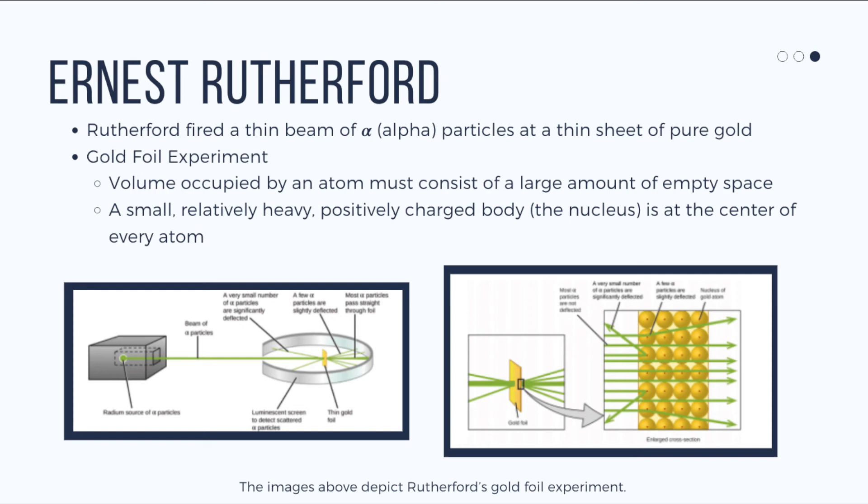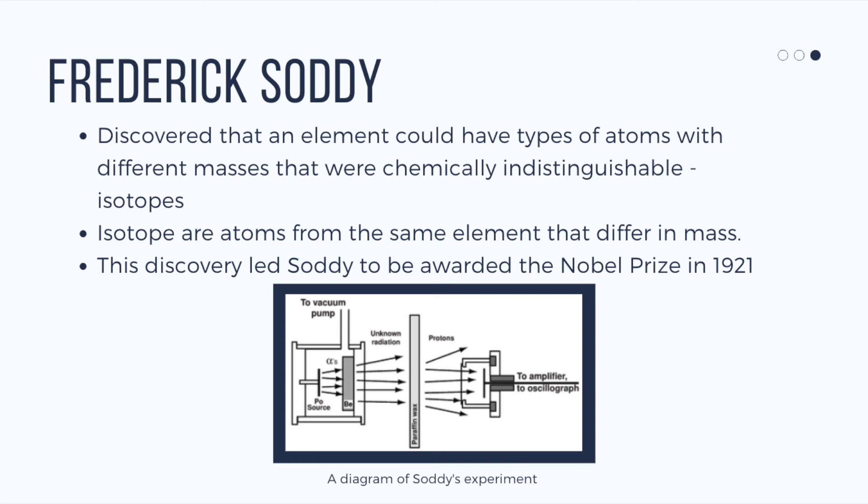Frederick Soddy discovered that an element could have types of atoms with different masses that were chemically indistinguishable. Chemically indistinguishable means that both atoms have the same identity.